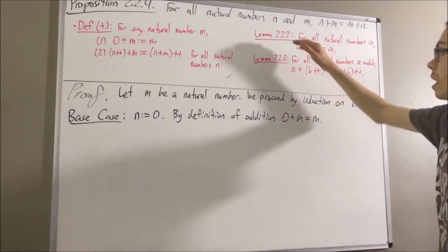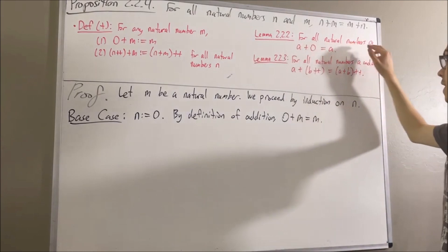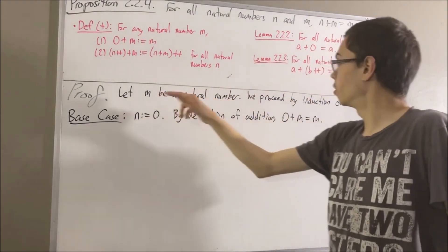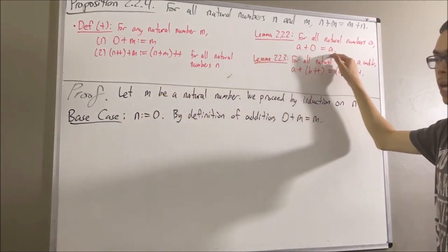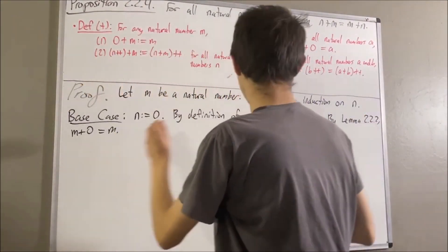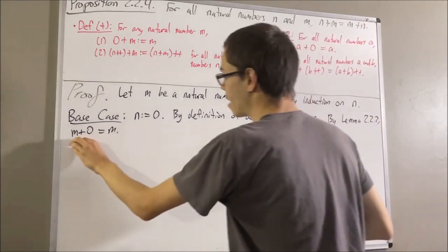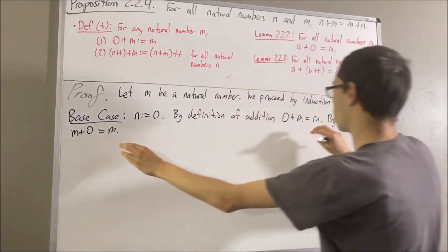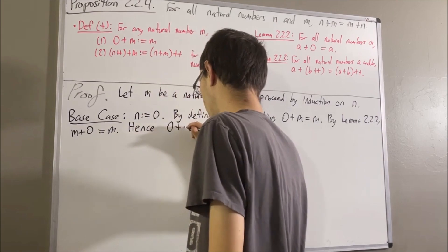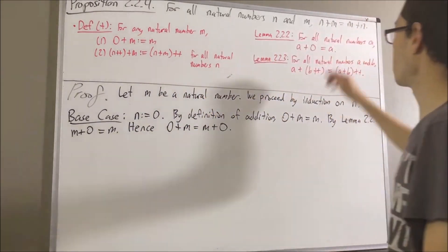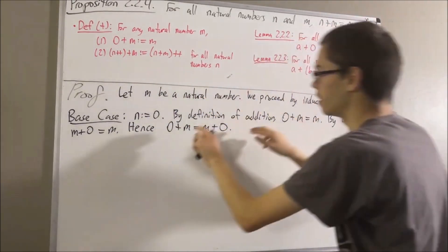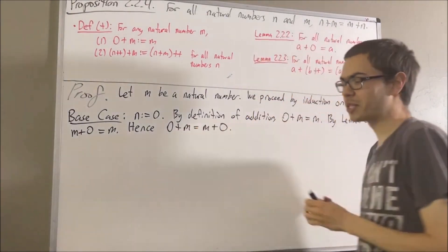We have that 0 plus m is equal to m. However, by lemma 2.2.2, if we take our natural number a here to be m, we have that m plus 0 is equal to m. So since both 0 plus m and m plus 0 are equal to the same thing, they must be equal to each other. So we have proven that this is true in the case where n is equal to 0. This completes the base case.